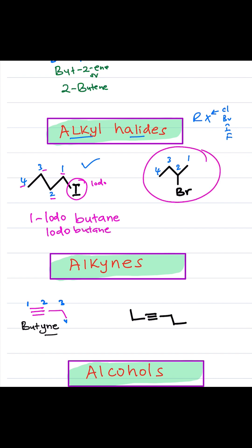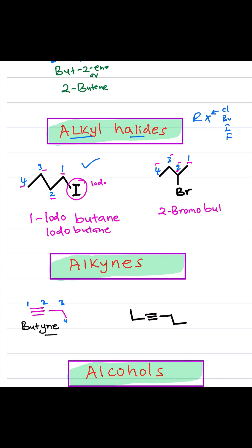In this next example, the bromine is connected to carbon number 2, and the alkyl part has 4 carbons, so it's still a butane. Therefore, we have to show the position of the bromine, so the name becomes 2-bromobutane. Butane is the parent name — always end with the parent name — and the side group is bromo on position number 2.